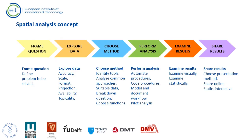Every spatial analysis we perform consists of several stages. We begin by defining the problem to solve, then we look for the necessary geospatial data. For example, in an optimal location problem, the data represents criteria that need to be fulfilled, such as proximity to a train station or market. Once we have verified the data, we choose the appropriate analytical approach, perform the analysis, and examine the results. The analysis can be performed on a pilot area, and if the method works correctly, it is repeated for the entire dataset. In the last part, we analyze and interpret the results visually and statistically, then make decisions and share the results.